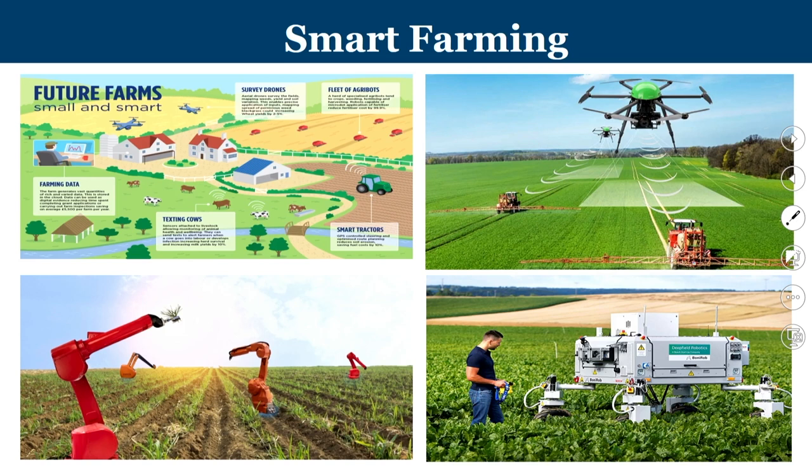Another important area with huge prominence in the Indian context is smart farming. Farming is becoming more sophisticated with agricultural robots and sensor-based mechanisms. Technology is helping farmers with lot of data manipulation and providing inputs to increase crop yield and farming productivity, with embedded intelligence in computing system-assisted farming environments.